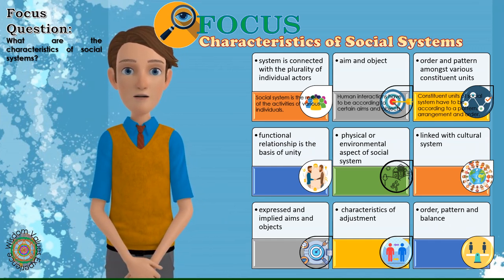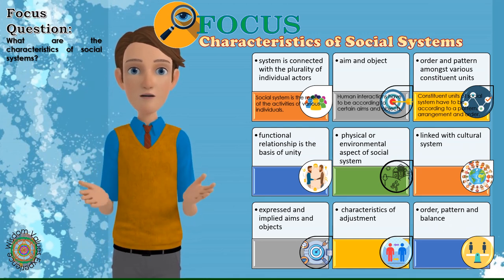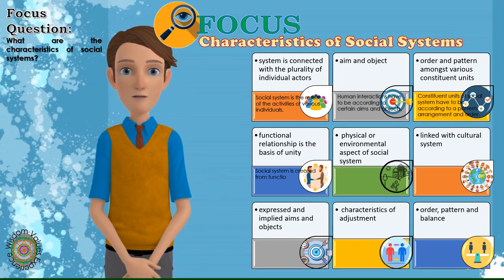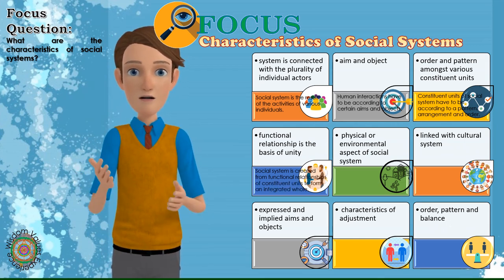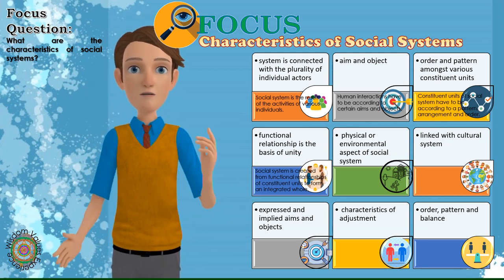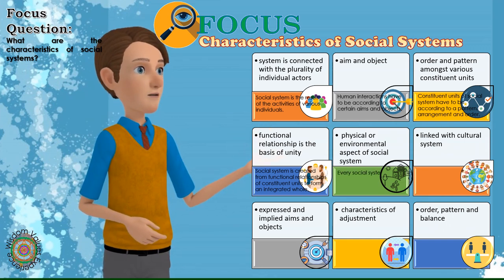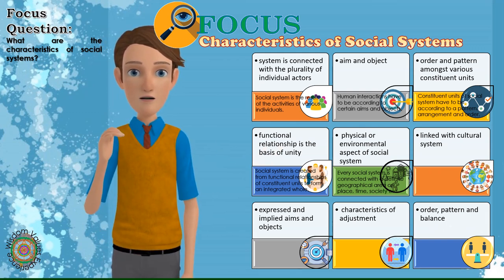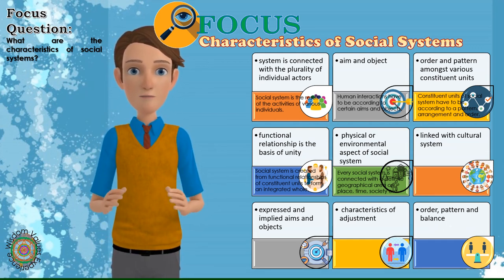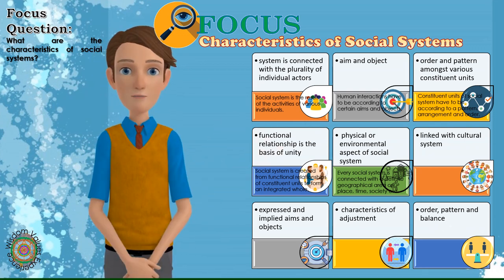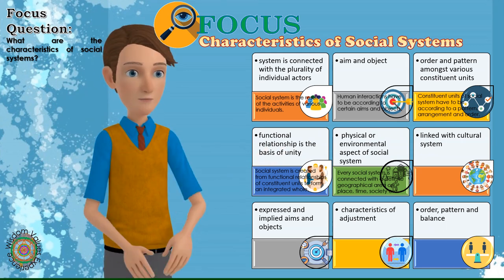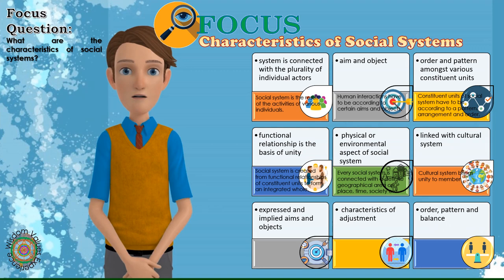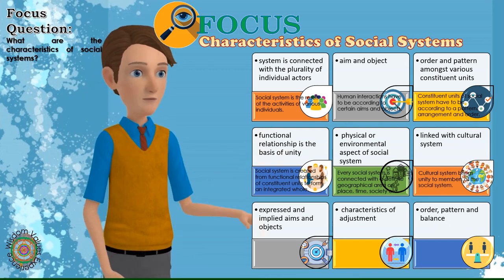4. Functional relationship is the basis of unity: Different constituent units have a unity in order to form a system. This unity is based on functional relations. As a result of functional relationships between different constituent units, an integrated whole is created — this is known as social system. 5. Physical or environmental aspect of social system: Every social system is connected with a definite geographical area or place, time, society, etc. In other words, social system is not the same at different times, at different places and under different circumstances. This characteristic of the social system points towards its dynamic or changeable nature. 6. Linked with cultural system: Social system is also linked with cultural system. Cultural system brings about unity amongst different members of the society on the basis of cultures, traditions, religions, etc.